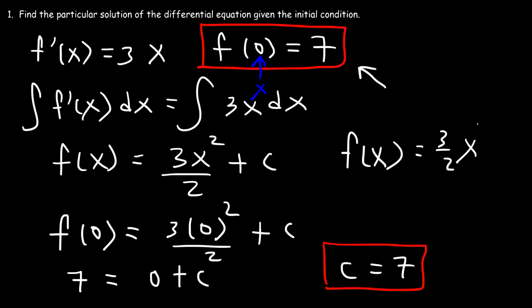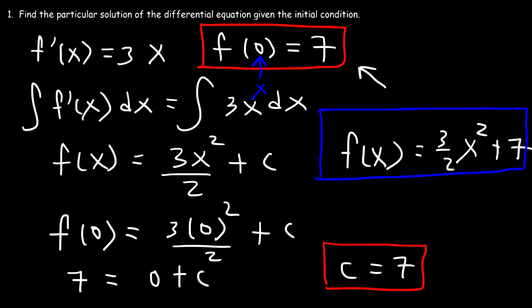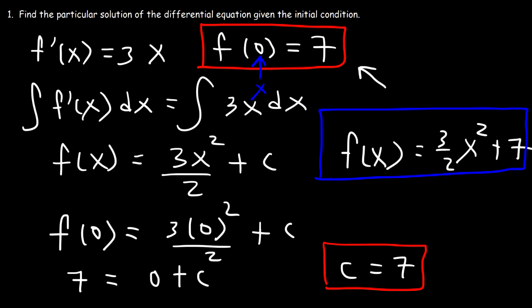So the particular solution is f(x) = 3x squared over 2 plus c, and that is the particular solution to this differential equation. Now let's go ahead and work on another example.